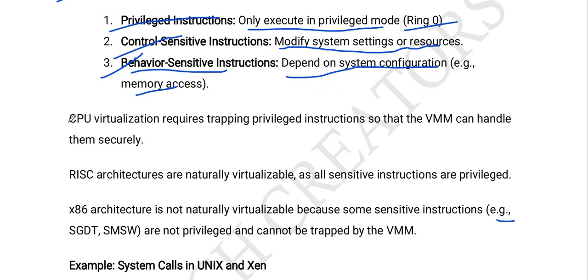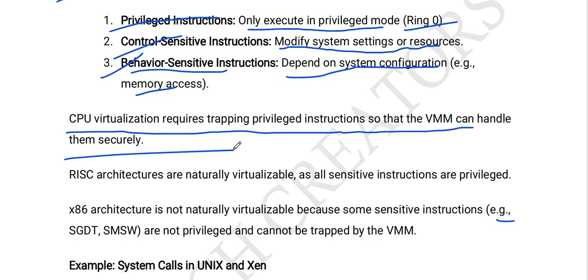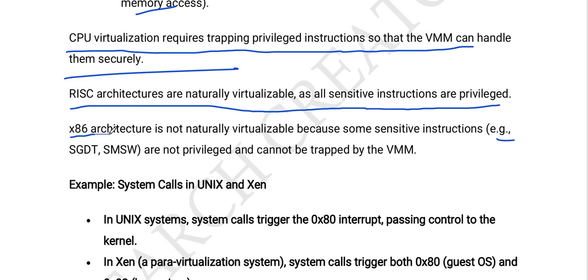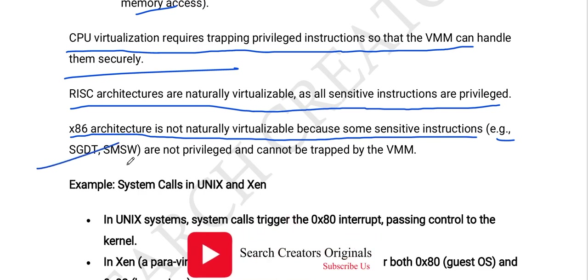CPU virtualization requires trapping virtualized instructions so that the VMM can handle them securely. The RISC architecture is naturally virtualizable as all sensitive instructions are privileged. X86 architecture is not naturally virtualizable because some sensitive instructions — for example SGDT, SIDT, and SMSW — are not privileged and cannot be trapped by the VMM.